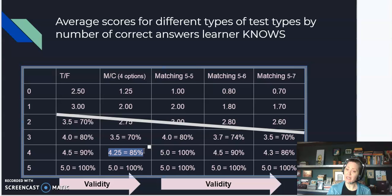Now looking at the matching with no distractors, so if there's five options and five questions, notice that a learner on average could get 100% by only knowing four out of the five. And they can reach the threshold of 80% accuracy on this type of assessment knowing only three out of five, which is 60% of the content.